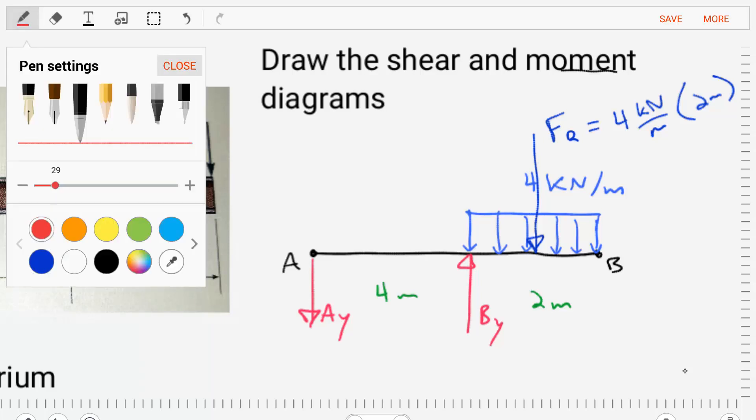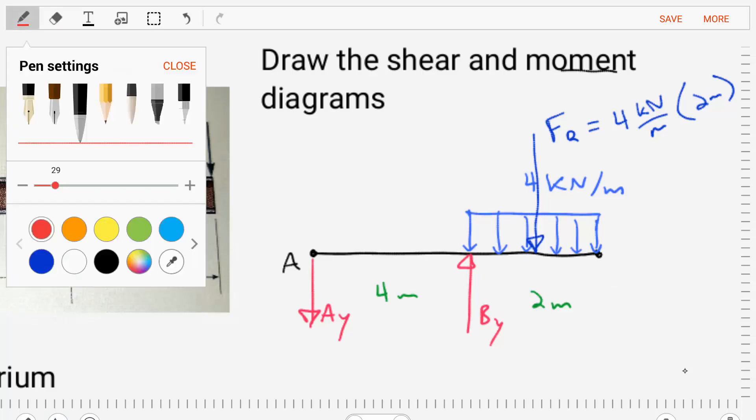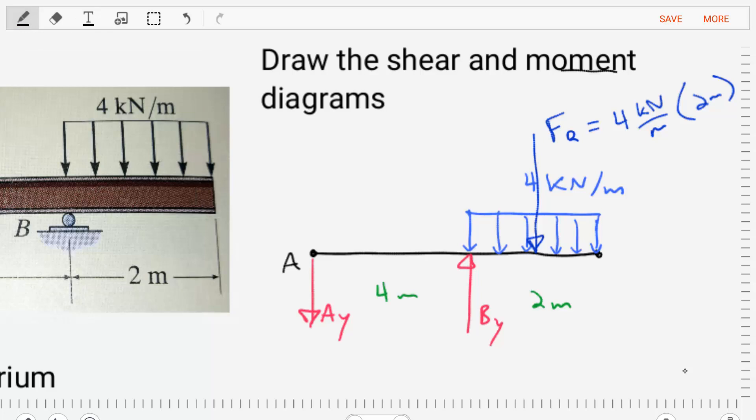We also replace the support at A with a reaction AY plus BY. Looking at this diagram, we have two unknowns, AY and BY, that we need to find.